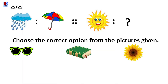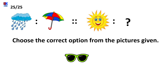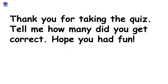And the last question: if rain is to umbrella, sun is to — ? Choose the correct option from the pictures given. If we use an umbrella during rains, we use sunglasses during sunny days. Thank you for taking the quiz!